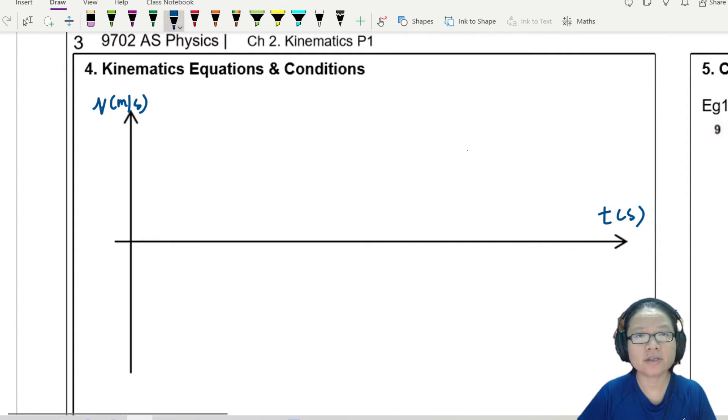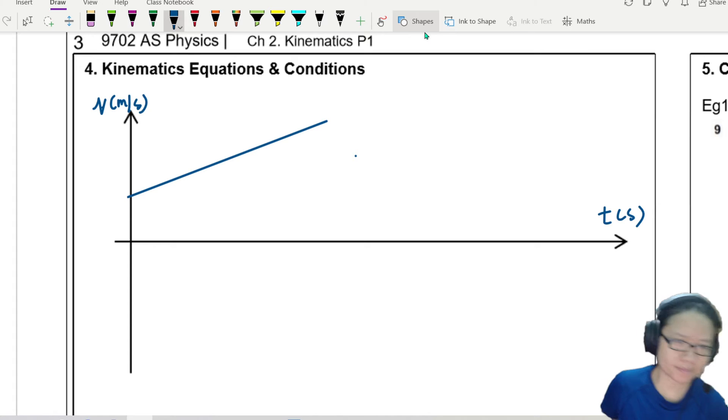Let's say you have an object, maybe a car, maybe a block, doesn't really matter, where the velocity changes with time, something like this. So let's mark out a few important values. For example, let's say when t is equal to zero, so this is your initial velocity.